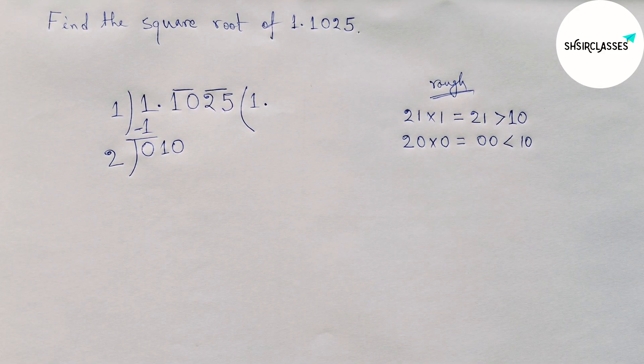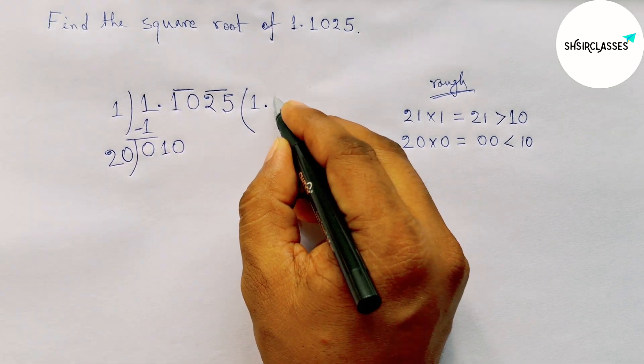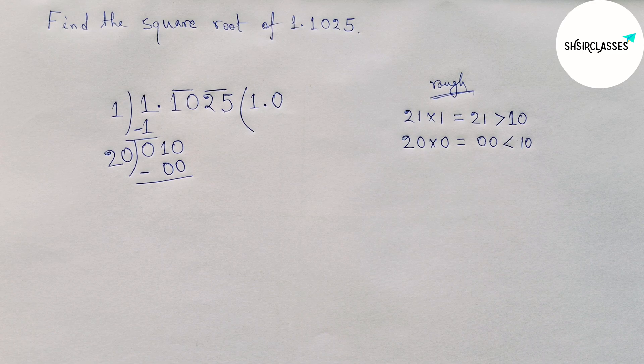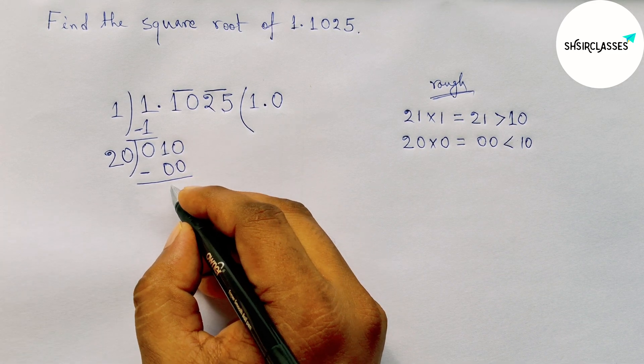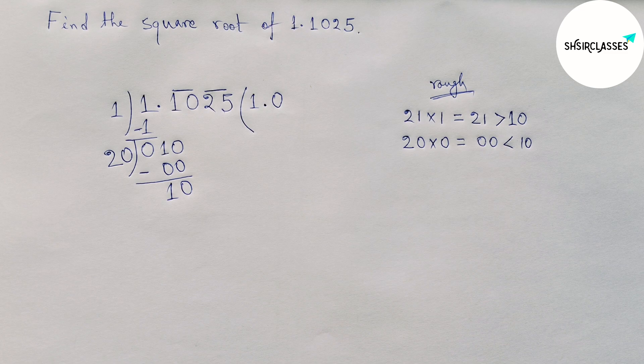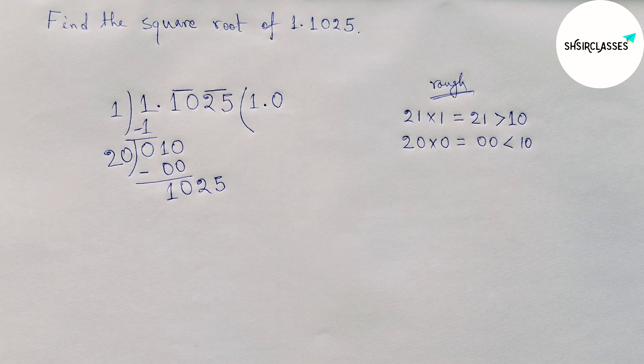Now putting here zero and here also zero, and here 20. Subtracting this, so this will be the same, so here 10. Next, write down here the second pair of number 25 and drawing a division line here.